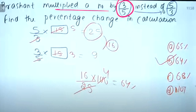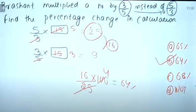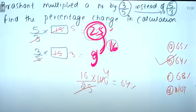So multiply 3 by 5 instead of 5 by 3. It was done, but 3 by 5 means no — so how much difference is it? 25 difference is gone.